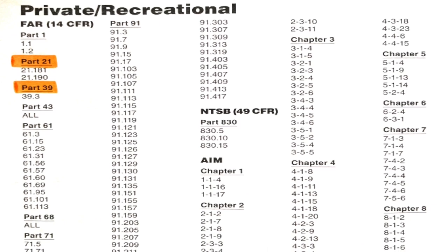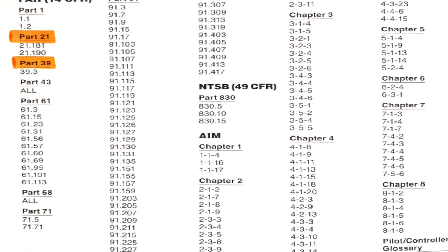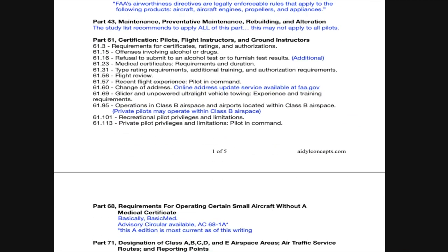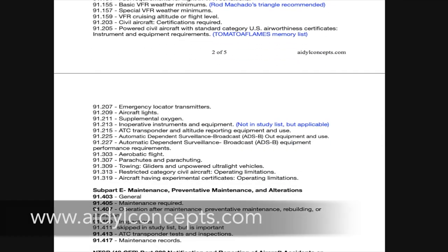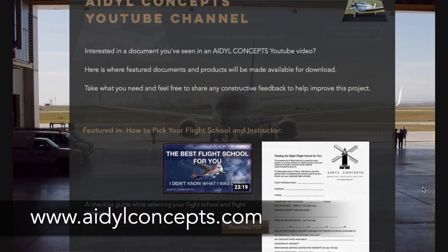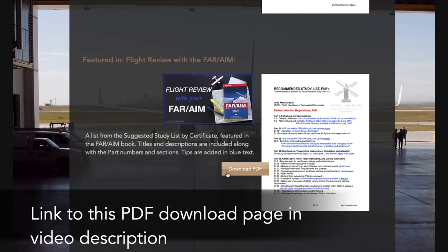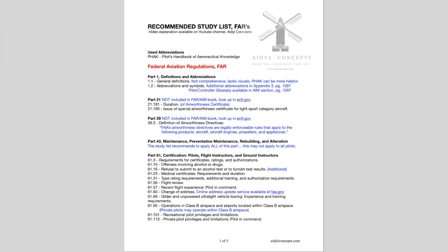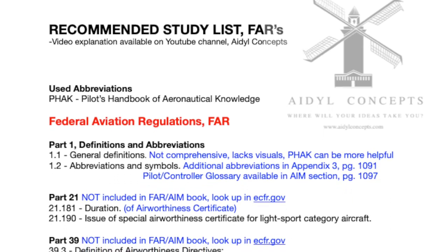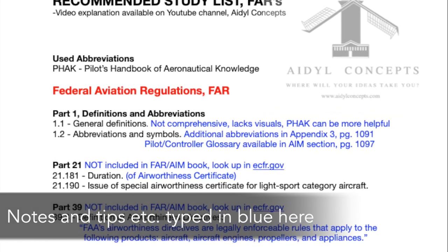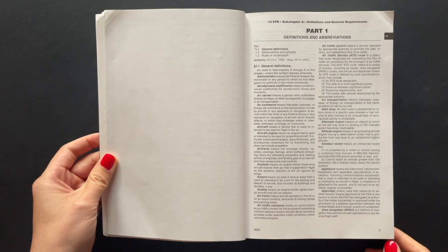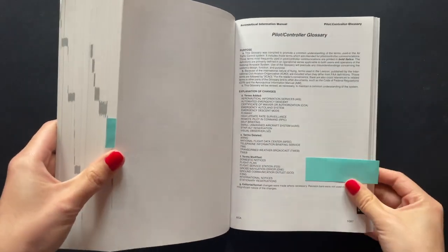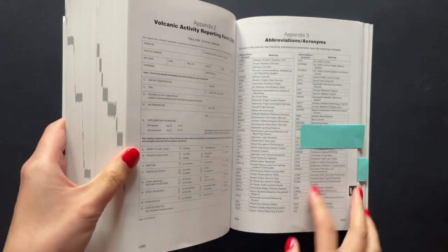Many of us won't find the listed numbers alone very revealing, so I started looking up what every item was titled and wrote down their included descriptions. That task took more than 10 minutes to type out, so I decided to make these notes available as a PDF posted on the Idle Concepts website at idleconcepts.com — linked in the video description. Starting with part 1, it goes over some definitions and abbreviations. I also noted that this book includes another list of abbreviations and acronyms in the appendix, followed by the pilot/controller glossary.